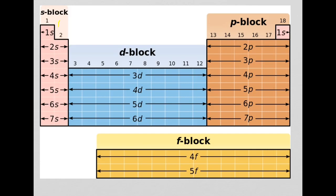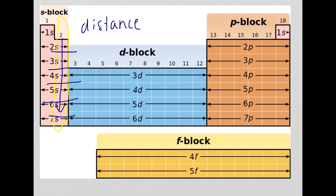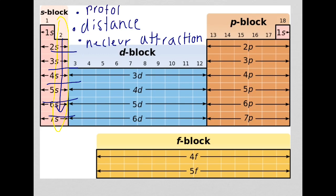The trend down group 2 is straightforward — ionization energy decreases. This is because there is more shielding from additional subshells, a decreased nuclear attraction since the nucleus can't pull the electrons in as strongly, and an increased distance from the nucleus. The key buzzwords to link in your answers are: distance, nuclear attraction, protons, and shielding — everything links back to nuclear attraction.